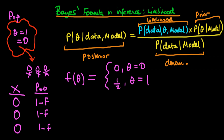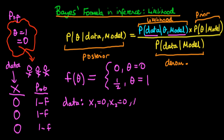In the likelihood we have two terms to define: the data and the model. The data in this example is what we've written down — more concretely, x1 equals zero, x2 equals zero, and x3 equals zero. In other words, the infected status of all three individuals is uninfected.